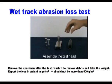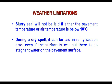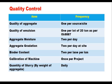These five tests are conducted on slurry seal to design its mixture. Regarding weather limitations, slurry seal will not be laid if either the pavement temperature or air temperature is below 10°C. It can be laid during a dry spell in rainy season even if the surface is wet, but there should be no stagnant water on the pavement surface. Quality control as specified in IRC code: aggregate quality checked once per source or per site; emulsion quality once per lot of 20 tonnes as per IS 887; aggregate moisture and aggregate gradation checked twice per day at site; binder content twice per lane per kilometre; machine calibrated once per project; and quantity of slurry by weight of aggregate checked on a daily basis.